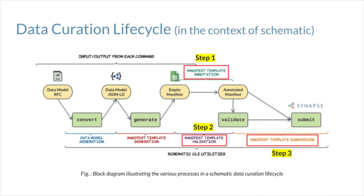In the context of Schematic, there are three main steps that are part of a typical biomedical data curation lifecycle: annotation, validation and submission of metadata. First, some background as to why annotation is important. Experimental data is typically annotated by the biologist or researcher who is responsible for running an assay. Different researchers may annotate data from the same assay differently, and this lack of standardization can cause problems creating downstream QC pipelines, visualizations, dashboards, etc.